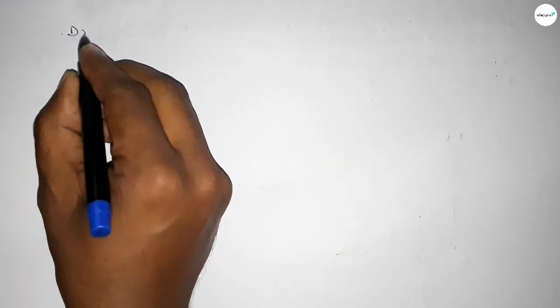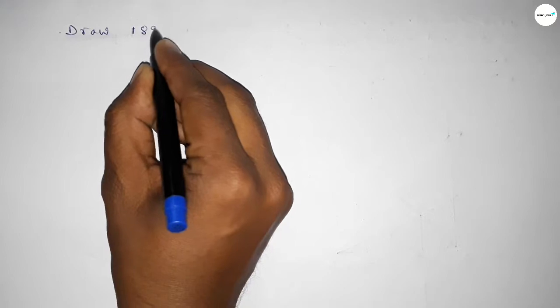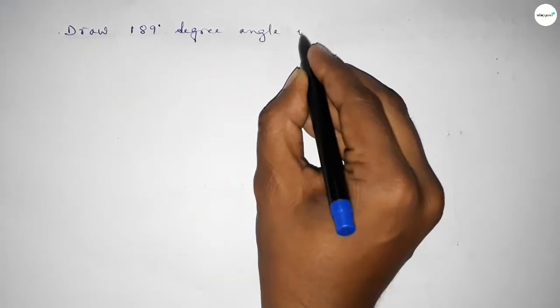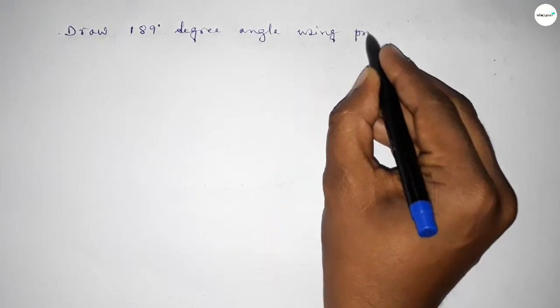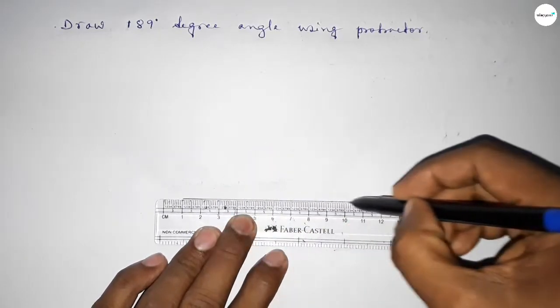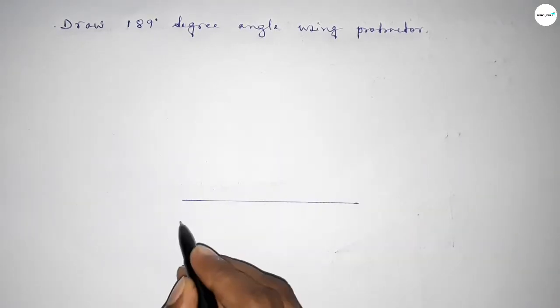Hi everyone, welcome to SSR Classes. Today in this video we have to draw 189 degree angle by using protractor. So let's start the video. First of all, we have to draw here a straight line of any length.